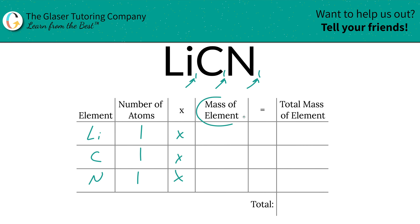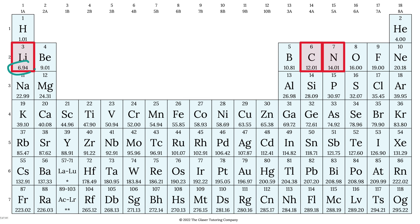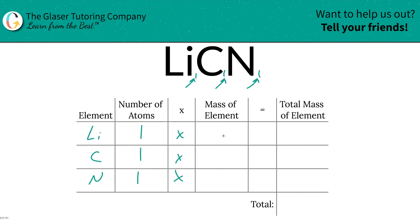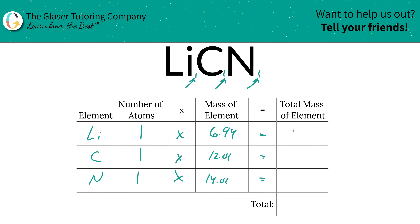We're going to multiply the number of atoms by the mass of each element. Take a look at the periodic table. Lithium is 6.94 atomic mass units. Carbon is going to be 12.01. Nitrogen is going to be 14.01. And then we're going to find the total mass of each element by multiplying across — though obviously this is very simple math here.